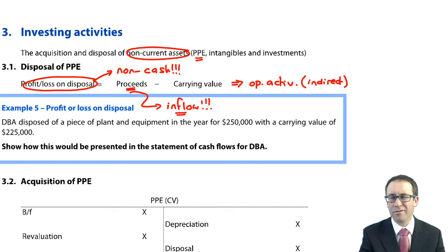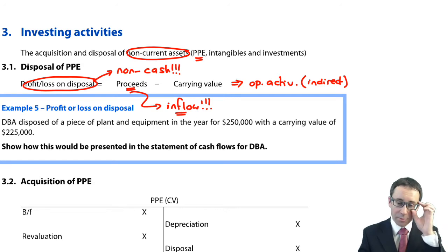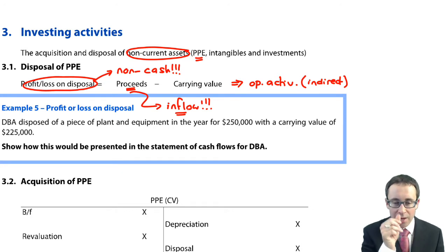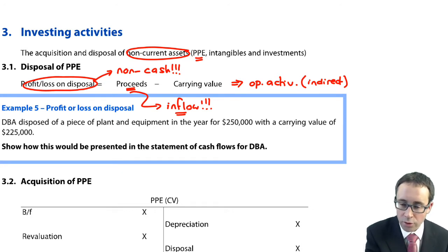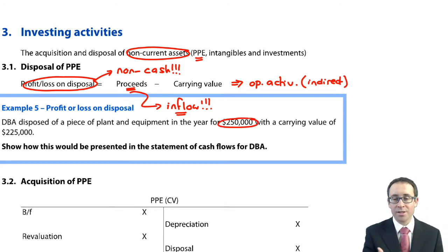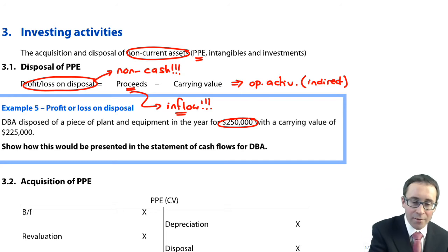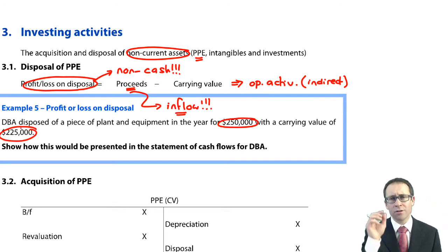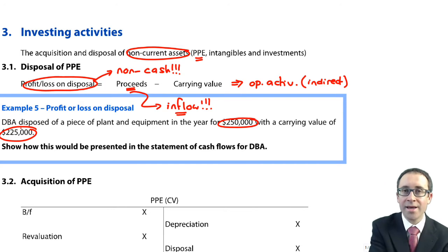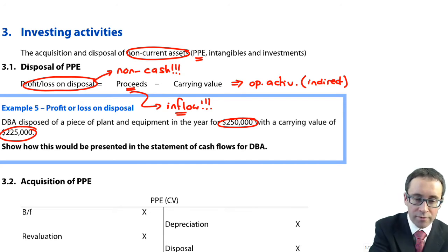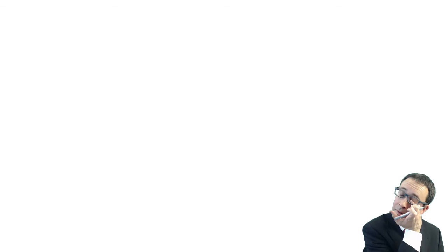So, example number five — really straightforward. How would this be presented in the statement of cash flows for DBA? DBA dispose of a piece of plant and equipment for $250,000 in the year — so that's your inflow. It had a carrying value of $225,000, so you can see you've made a profit on disposal of $25,000.